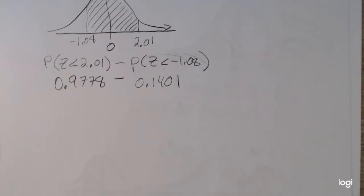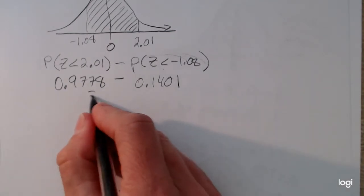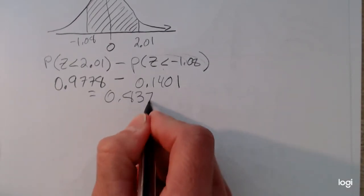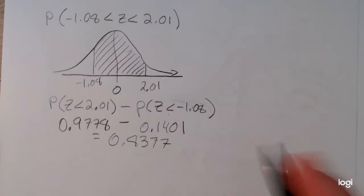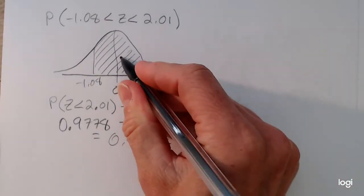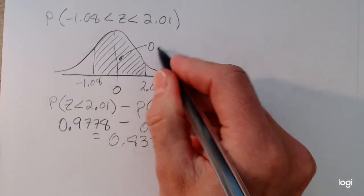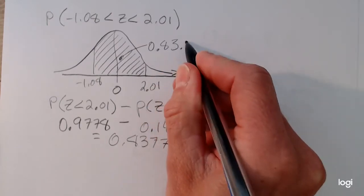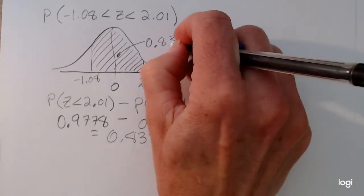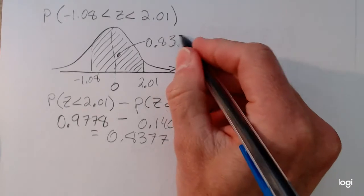And doing that subtraction in my calculator, 0.401, I get an area of 0.8377. And that's also the probability of getting a z-score between those two values. So about 83.77% of the area has been shaded.